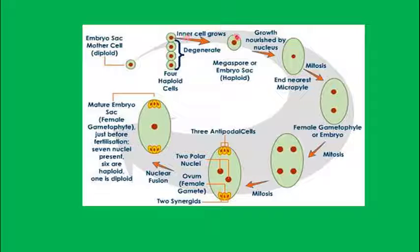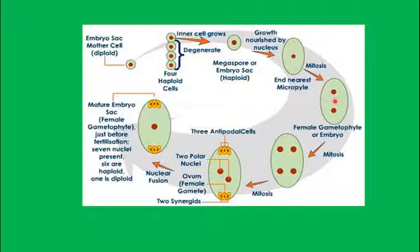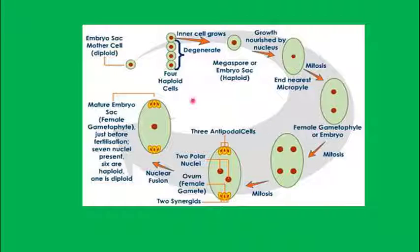The surviving megaspore grows, nourished by the nucellus. From here it is mitotic division — it divides mitotically to form two cells. It is free nuclear, meaning no cell wall forms. Then it undergoes mitotic division again to form four cells, and again to form eight cells. All of these are mitotic divisions, while the earlier step was meiotic or reduction division.